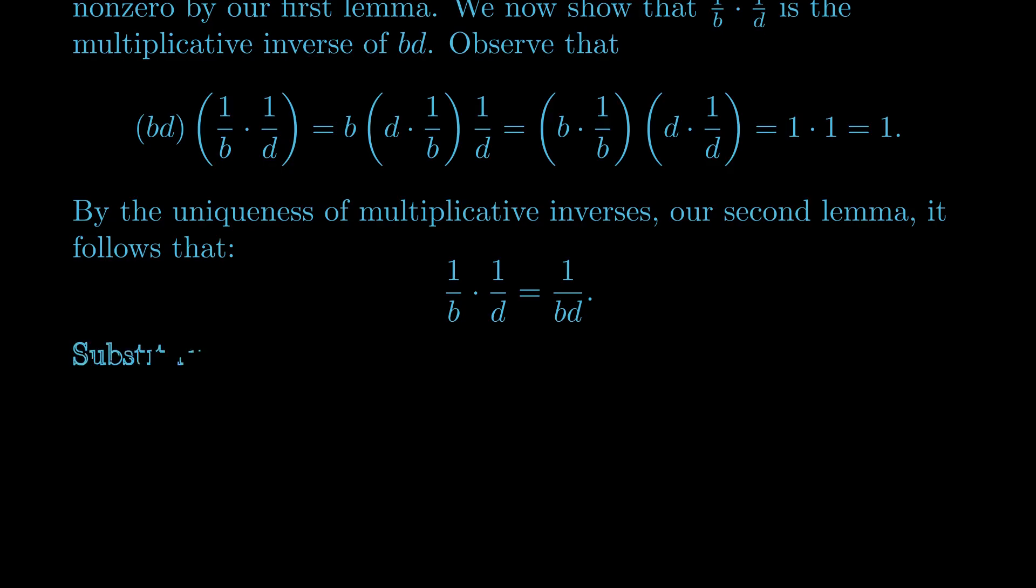Substituting this back into our earlier equation and using the definition of division to rewrite the right-hand side, we can conclude that (a/b) × (c/d) = ac/bd, proving the result.